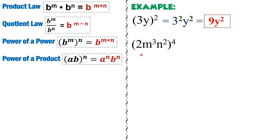Another example: 2m cubed n squared, all raised to 4. Since 2, m cubed, and n squared are all inside the parentheses raised to 4, we distribute this 4 to each factor. But if a factor already has an exponent, you multiply the exponents — using the power of a power law. That is, if there is an exponent inside that is raised to another exponent, we multiply them.